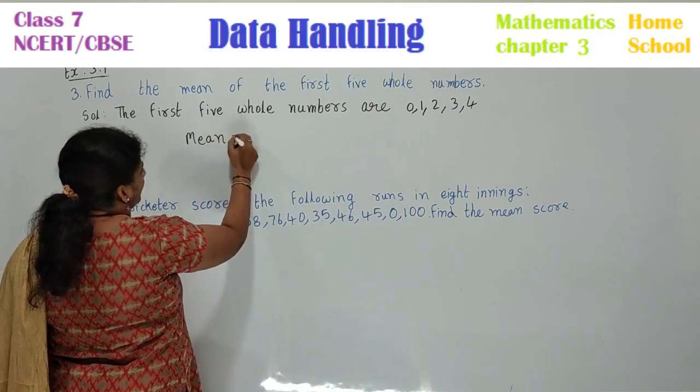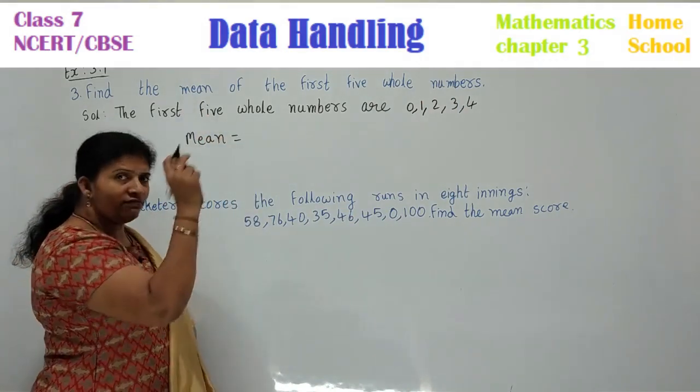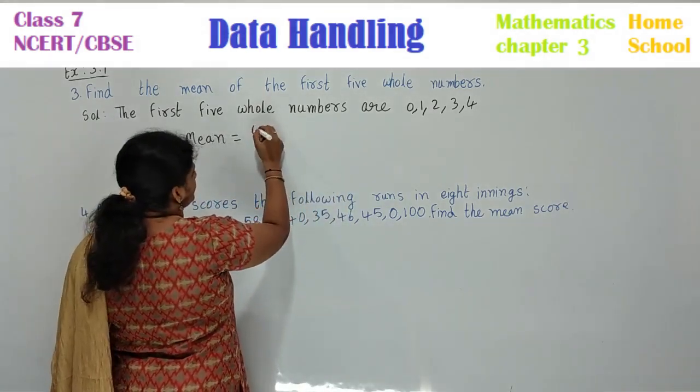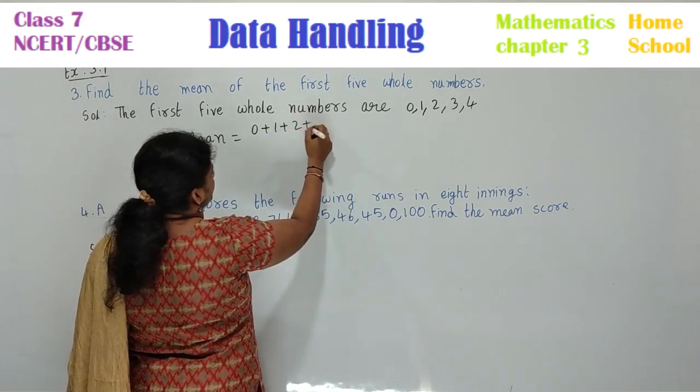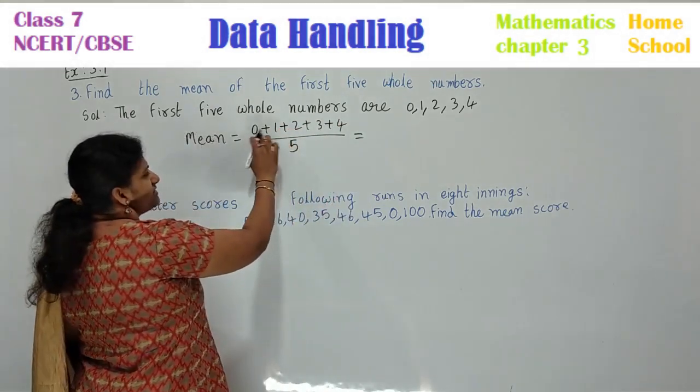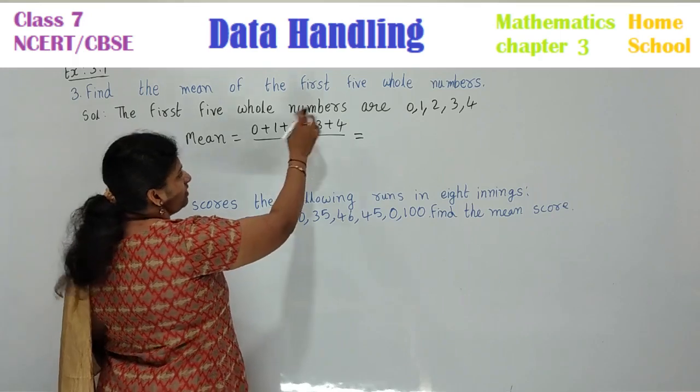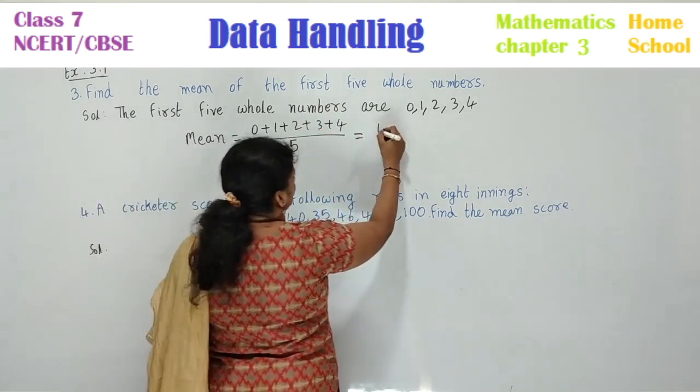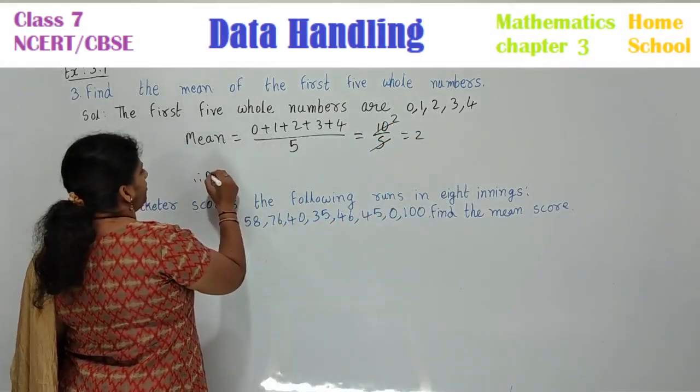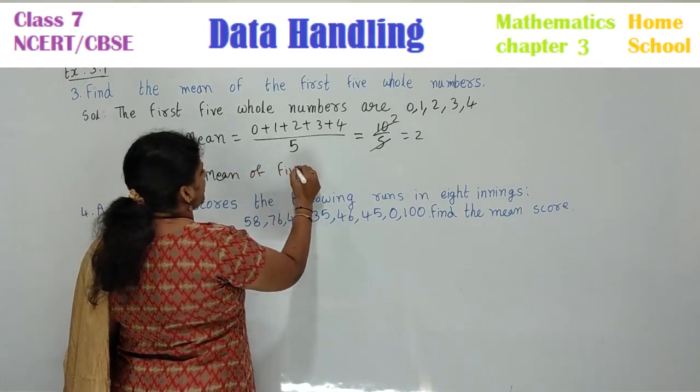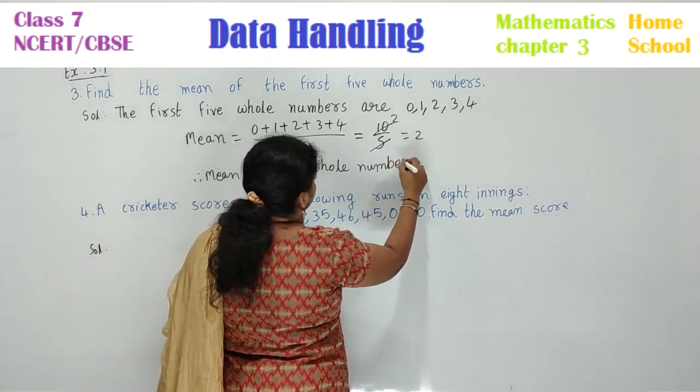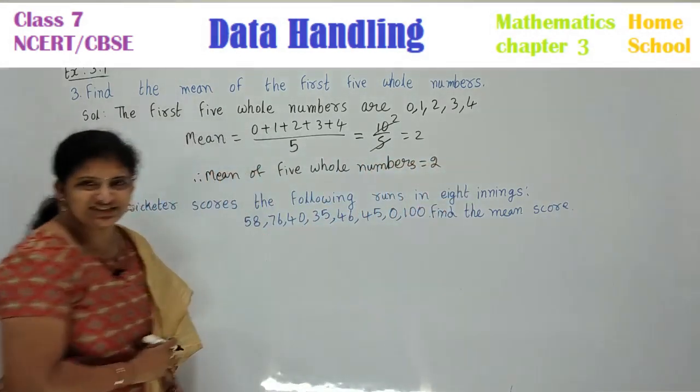What is the question they asked? Mean. How do you calculate mean? What is the mean formula? Sum of the scores by number of scores. Add all these: 0 plus 1 plus 2 plus 3 plus 4 by how many scores? 5. Now add this: 0 plus 1 is 1, 1 plus 2 is 3, 3 plus 3 is 6, 6 plus 4 is 10. 10 by 5, if you cancel, your answer is 2. Therefore, mean of first 5 whole numbers is equal to 2.